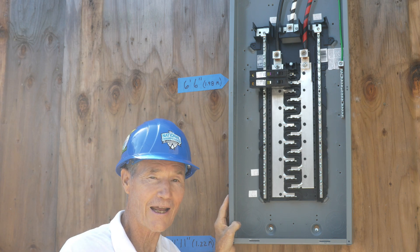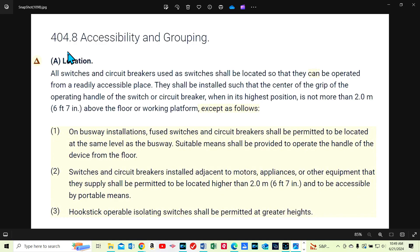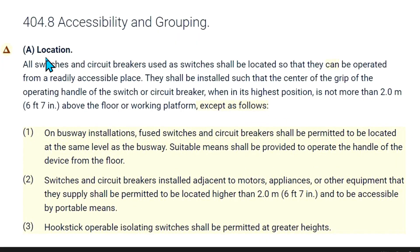Let's go to the 2023 NEC code book and handbook for answers. This is article 404.8 of the 2023 NEC code, accessibility and grouping. And this delta symbol right here means that there have been changes for 2023, and this shaded area is where the changes are.